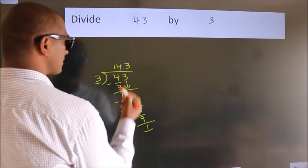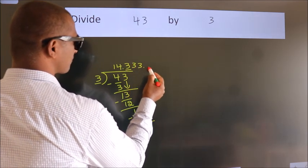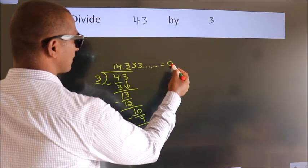That means this number keeps on repeating. So this is our quotient.